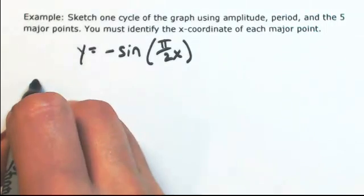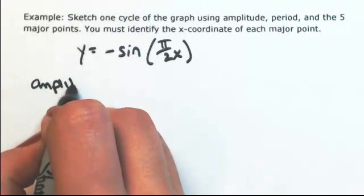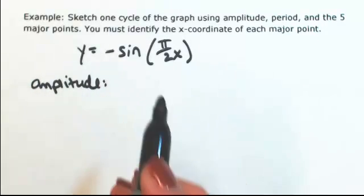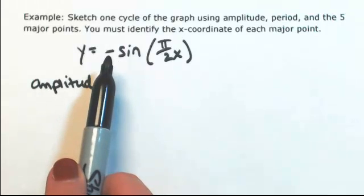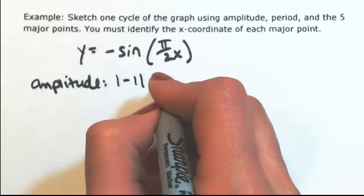So the first thing we're asked to do is find the amplitude, and that's found by looking at the number in front of the sine function, absolute value of that. So the absolute value of negative 1 is 1.